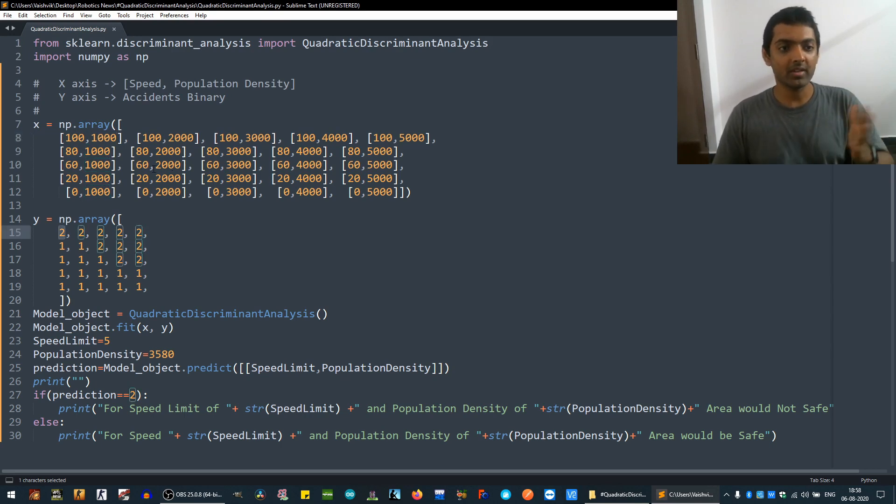For example, at speed 100 and population density in one kilometer area of 1,000, we have accidents because the speed is high. For example, 60 speed limit and population density of 2,000, they are not accurate. So, if we have this kind of data, this model can help us.